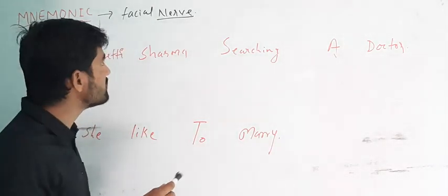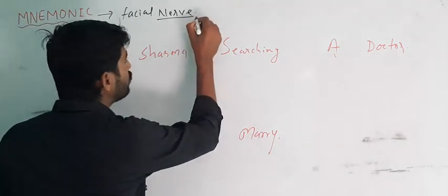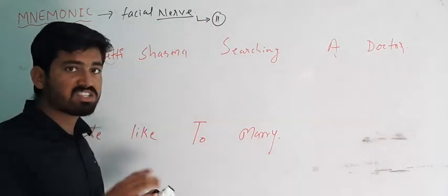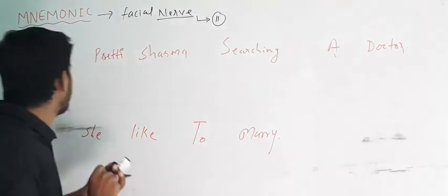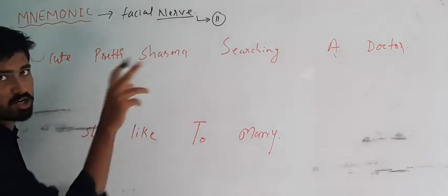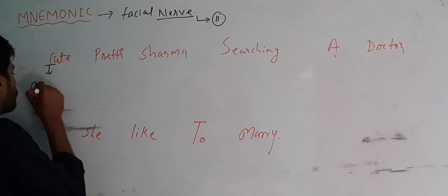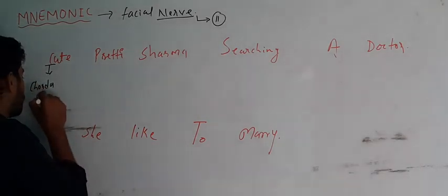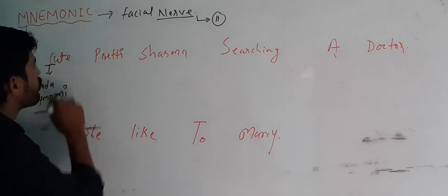Can you tell me how many branches the facial nerve has? Total is 11. In total, 5 are the terminal branches. Now, Cute Preeti is somehow searching a doctor. What does C mean? C means Chorda tympani. C means Chorda tympani.